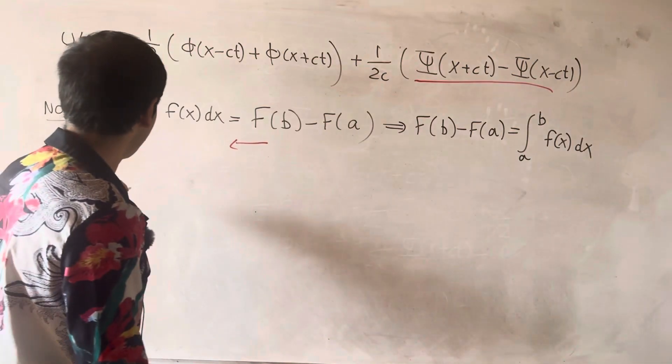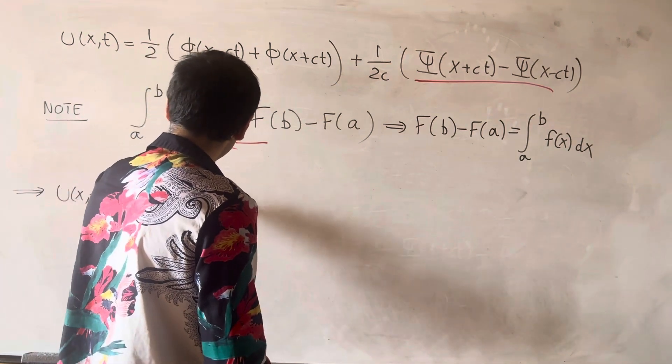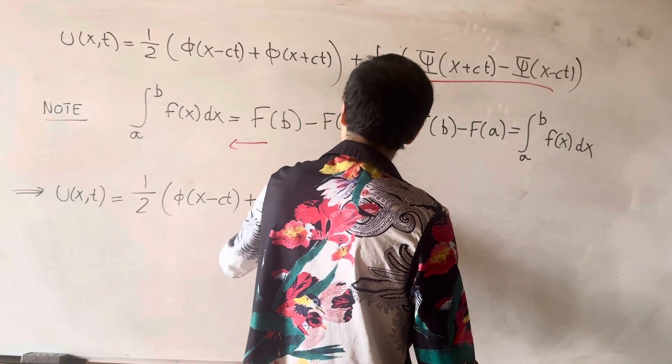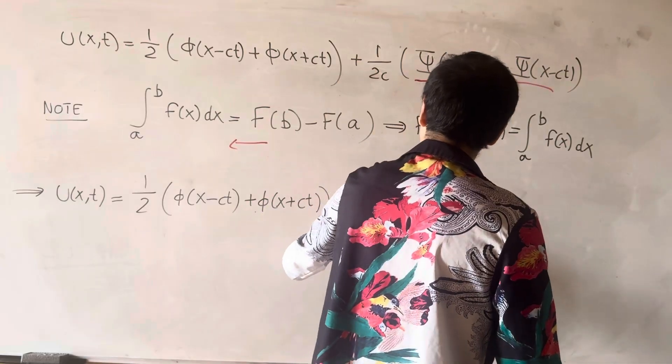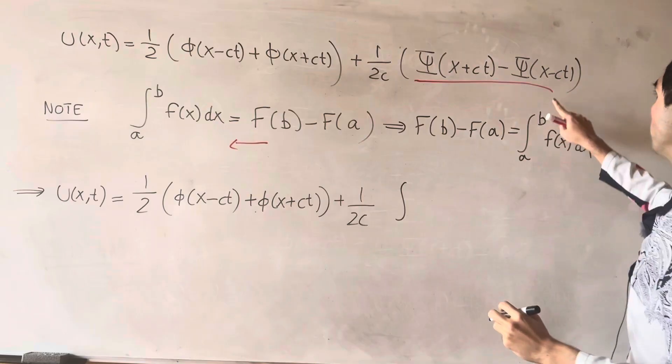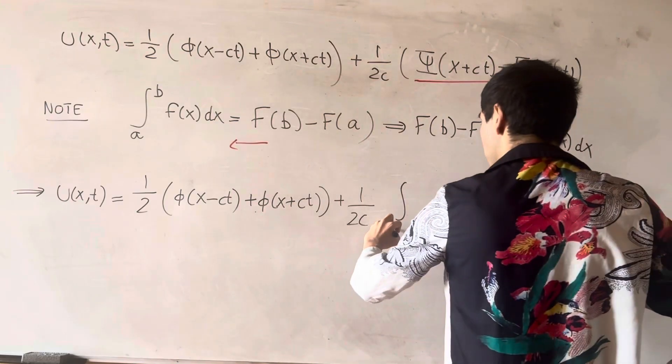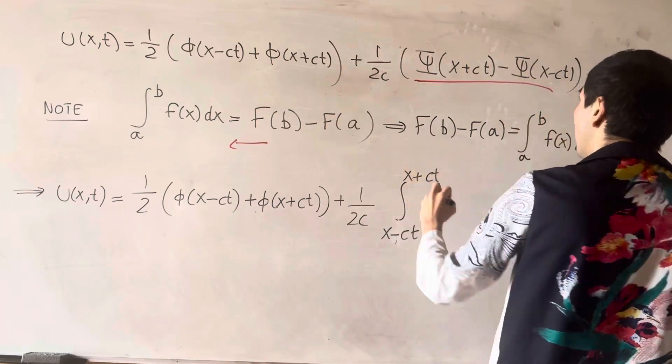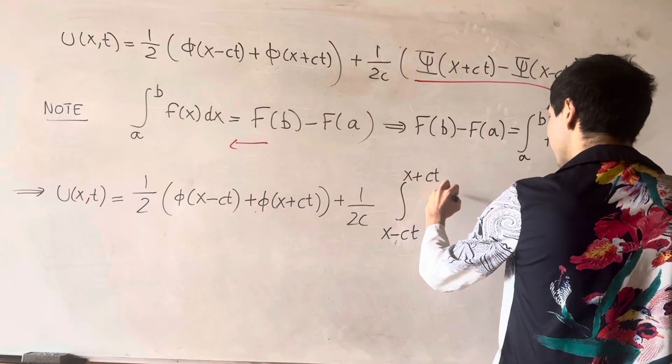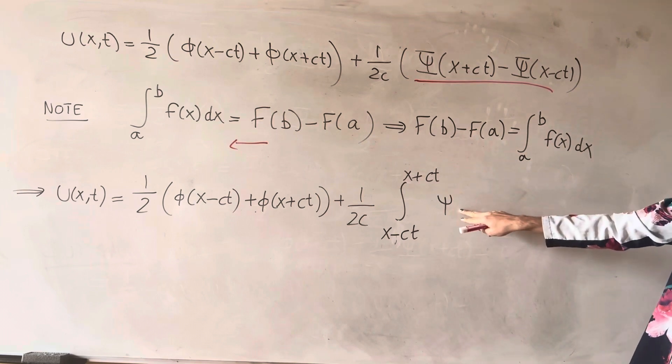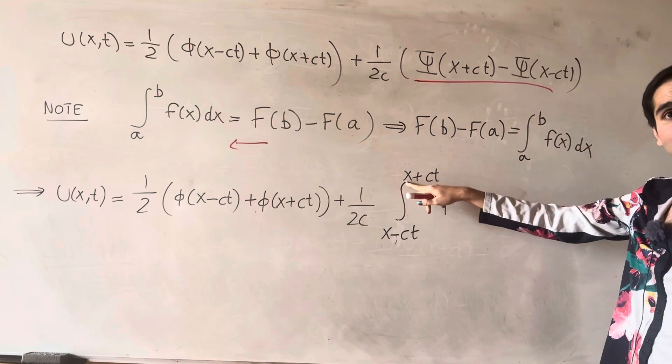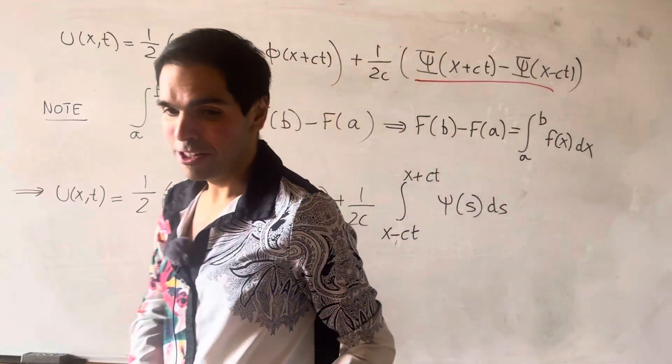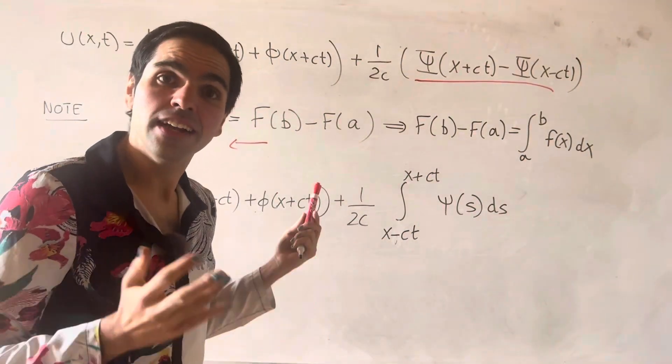So in the end we do get the following formula. So u is one half phi of x minus ct plus phi of x plus ct. And then plus one over 2c. And now the integral from x minus ct to x plus ct of the derivative of capital Psi, which is little psi. And then technically we want to write psi of x dx. But we already have x here. So let's just use another variable. Let's say s. Just a dummy variable. And what we obtain, lo and behold, in the end is the celebrated d'Alembert's formula.